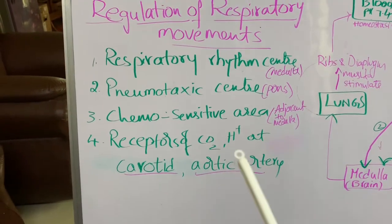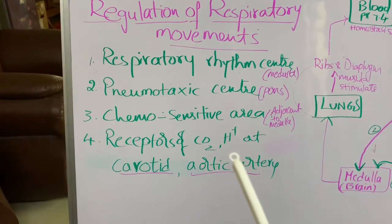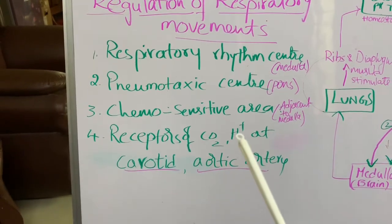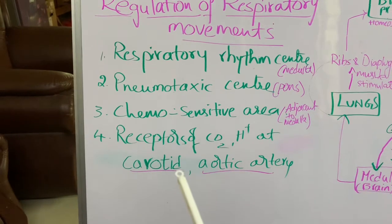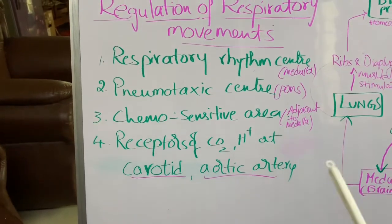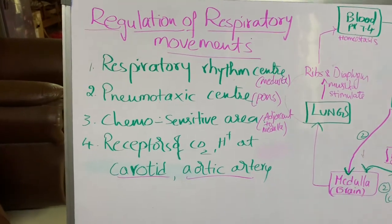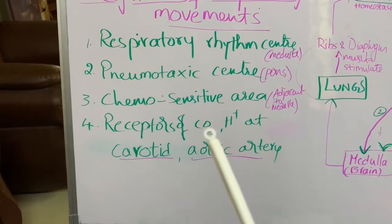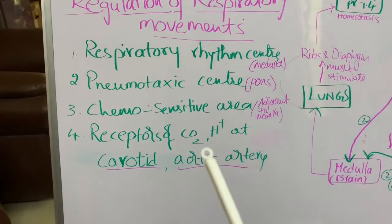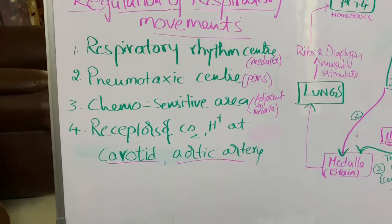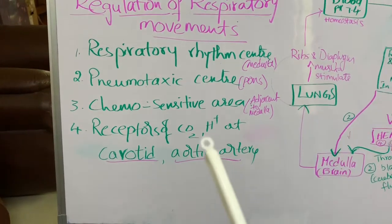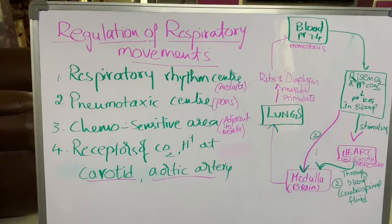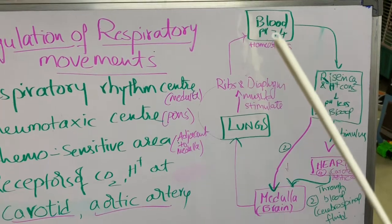The fourth one is receptors for CO2 and H+ ions present at the carotid arteries and aortic arch. These are blood vessels in the heart region. These two blood vessels contain receptors which can detect any increase in carbon dioxide and H+ ion concentration, and these receptors automatically send signals to the respiratory rhythm center to take the necessary adjustments.